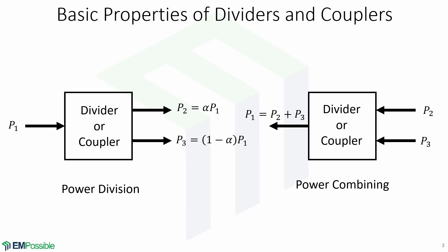Power dividers and directional couplers are passive microwave components used for power division or power combining. In power division, an input signal is divided into two or more output signals of lesser power, while a power combiner accepts two or more input signals and combines them at an output port. The coupler or divider might have three ports, four ports, or more.